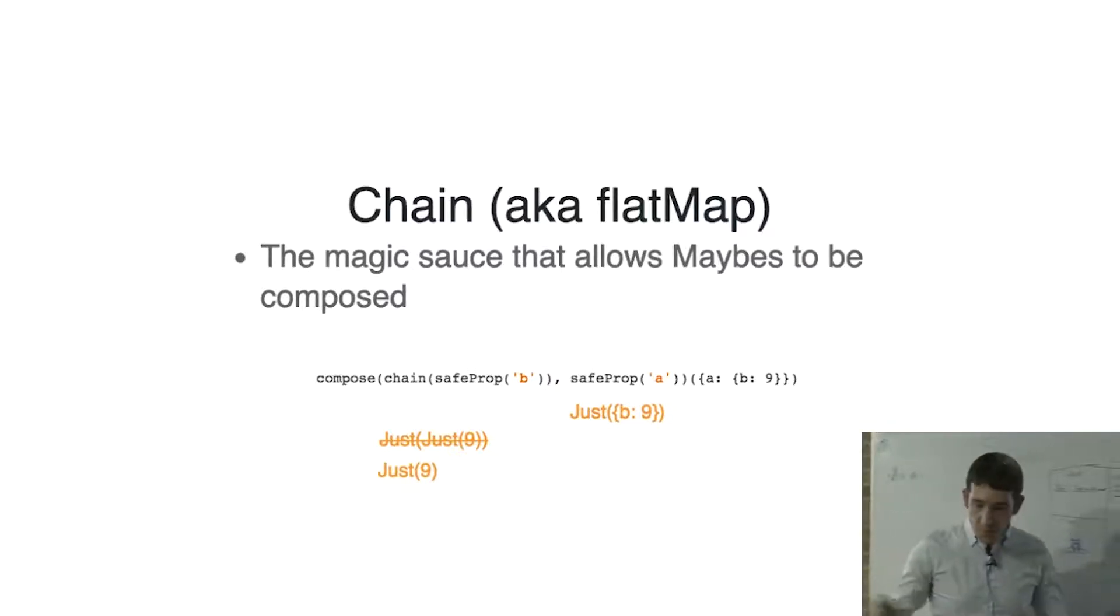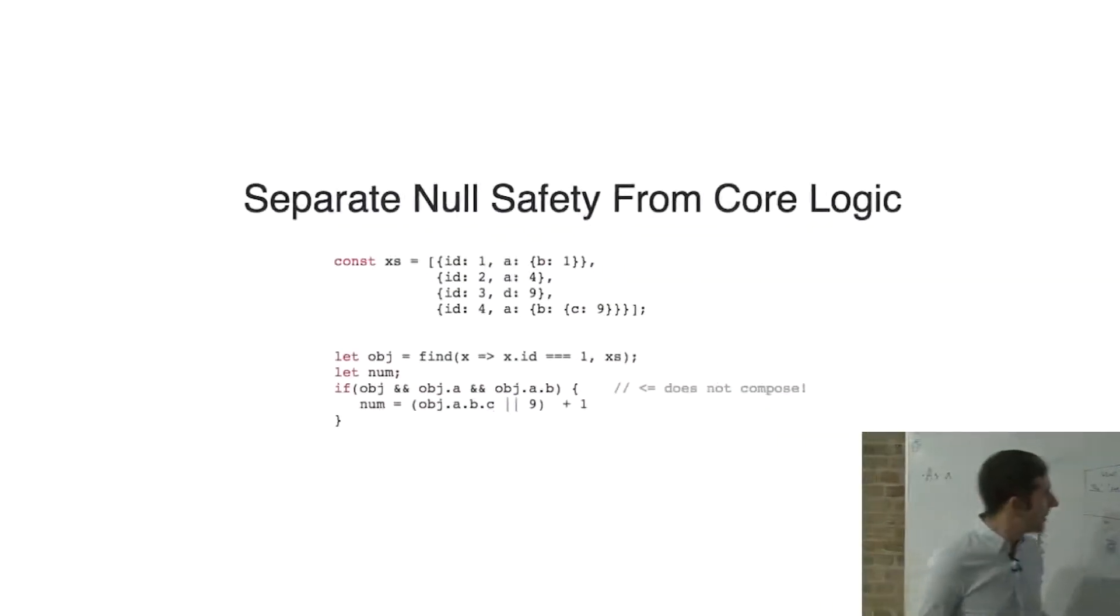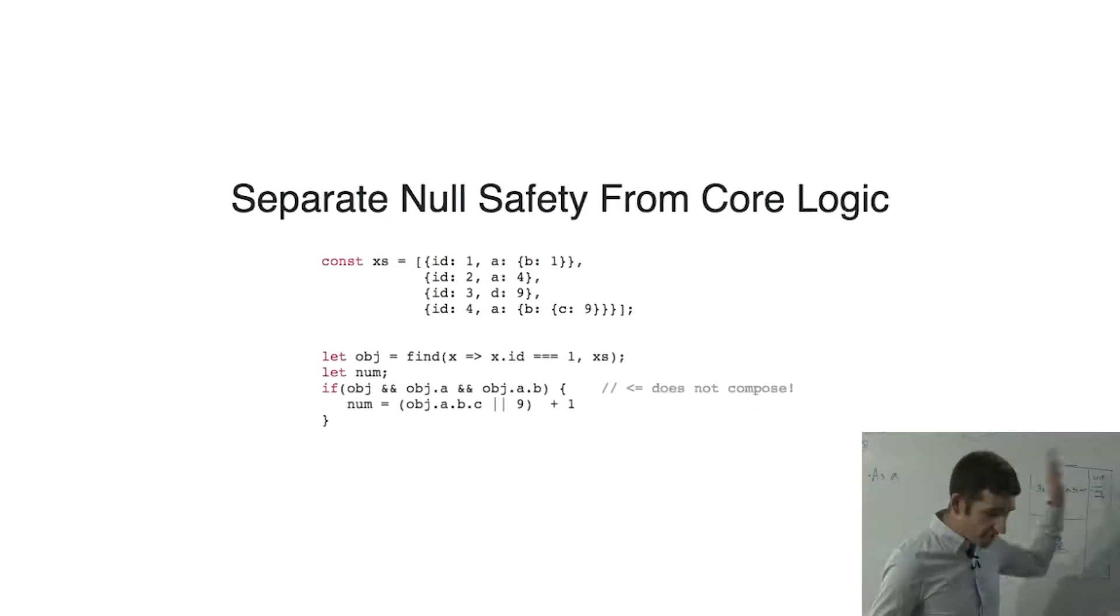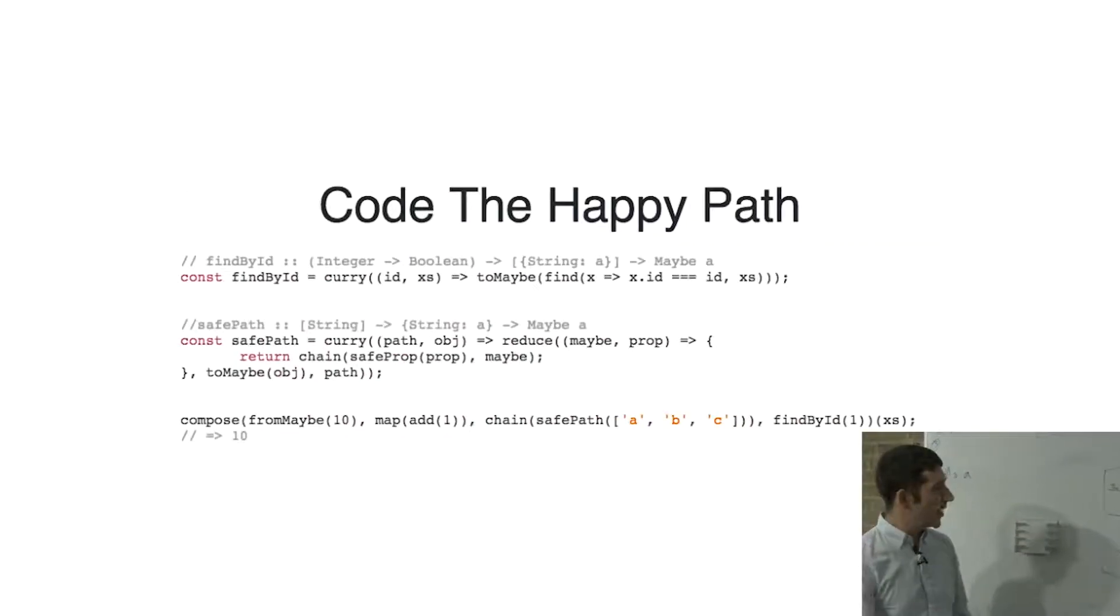Now, what's the point of all this? So the main thing is that it helps you separate null safety from core logic. So this is kind of like a pseudo imperative piece of code. The main thing that it's meant to do is just go through a list, find an object. And if it doesn't find it, it'll return 10. And there's actually a bug in there. So I'll come back to that in a second. So what we want to do, code the happy path instead of having to worry about things being null all the time.